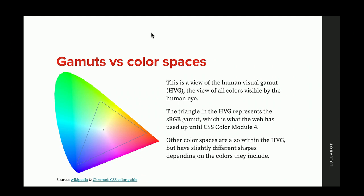This is what the human visual gamut looks like — a kind of weird triangular shape with bunches of colors on it, showing all colors visible by the human eye. There's a little triangle inside it, and that is sRGB — the range that the sRGB gamut supports within the human visual gamut. Obviously, it's not as big as the actual wide range of colors visible by the human eye. This is what we've had to work with in that little triangle up until CSS Color Module 4.